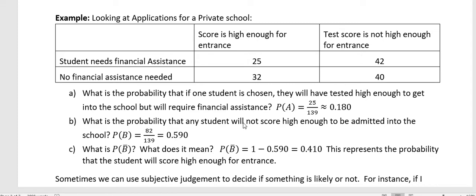What's the probability that any student will not score high enough to be admitted into the school? Now we want to know all the students that tested but weren't testing high enough to get in. Again we have a total sample space of 139, but here I'm looking at all the people who did not score high enough - that's 82 people. So 82 divided by 139 gives me 0.590.